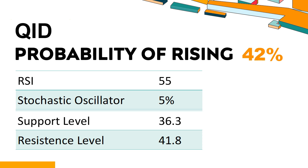What technical factors should you consider when analyzing QID? Technical Signals and Analysis: QID's 14-Day Relative Strength Index (RSI) value was 55. When the RSI is between 50 and 70, it generally indicates that the stock is moderately bullish. This means that the security's price has been rising but has not yet reached overbought levels, which are usually considered an RSI reading of 75 or higher.